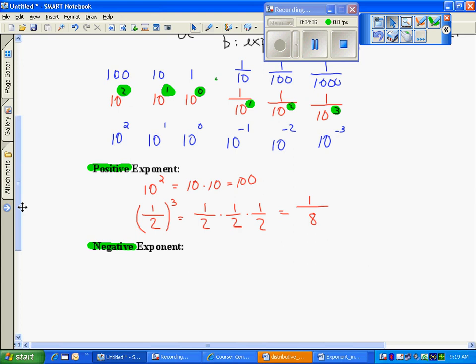Negative exponents. If I look at the example, it said one-tenth was equal to ten to the negative one power. So if we take a look and analyze that, this negative exponent is representing a fraction. It really means it belongs in the denominator.